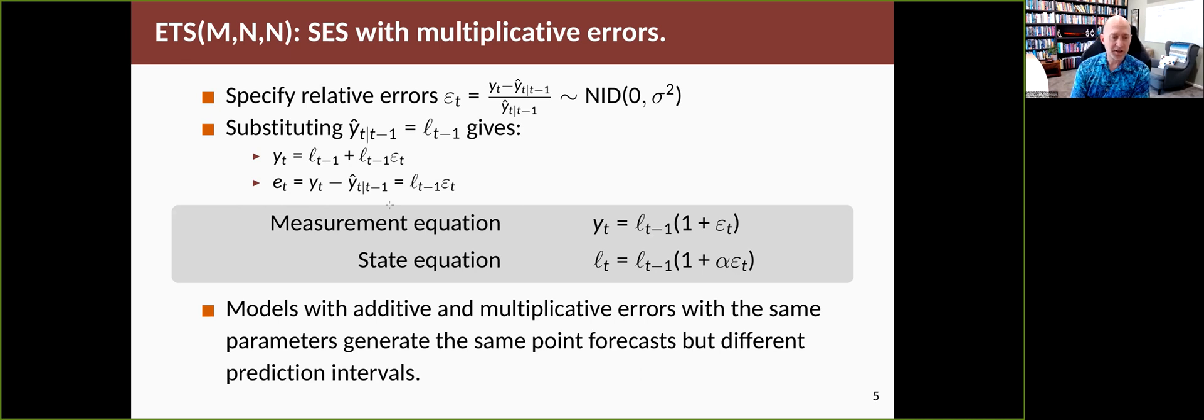Both sets of equations will give the same point forecasts, assuming alpha is the same and l0 and b0 are the same. Assuming you've got the same parameters, you will end up with the same point forecast, but you'll have different prediction intervals because you've got different properties of the errors. So this one we call ETS MNN for multiplicative errors. So the ETS stands for error trend seasonal, but also sort of evokes exponential smoothing. The E for error corresponds to M multiplicative errors, the T corresponds to the second one, and the S corresponds to the third one. So we have two models now, we have an ANN model and an MNN model, both of which underpin simple exponential smoothing.